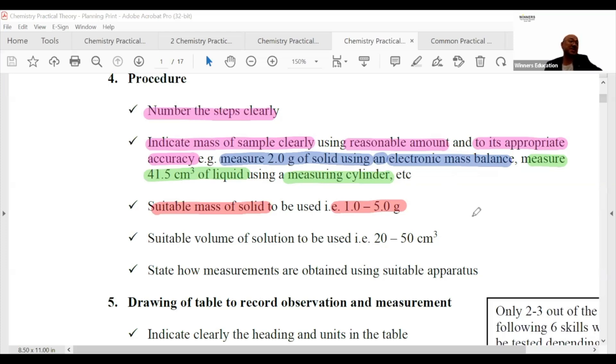Depending on the experiment, too small - maybe cannot see any reaction. Too small, the reaction takes too long. So it must be an appropriate amount. Suitable volume to be used usually is 20 to 50 cm³, depending on the apparatus you use.